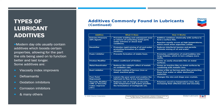Types of lubricant additives. Modern day oils usually contain additives which boost certain properties, allowing for the parts that the oil is being used on to function better and last longer. Some of the additives are viscosity index improvers, which help sustain the viscosity at different temperatures; defoamants, which resist foaming from high speed machinery; oxidation inhibitors, which resist oxidation at high temperatures; and corrosion inhibitors, which prevent corrosion on metal surfaces, and many more.